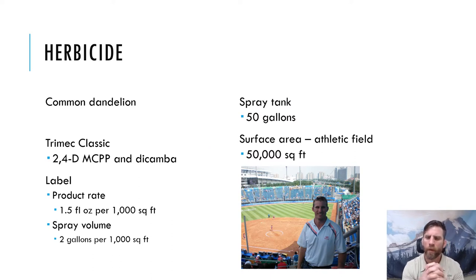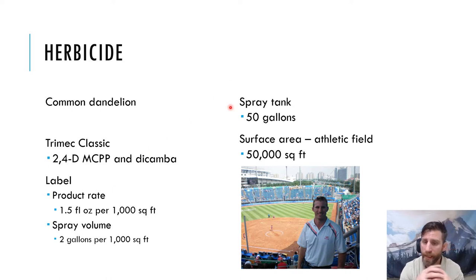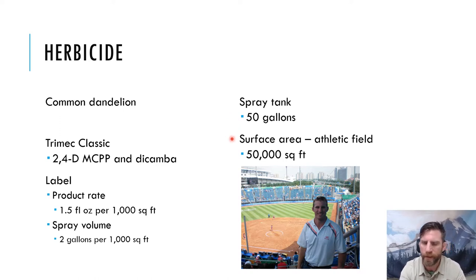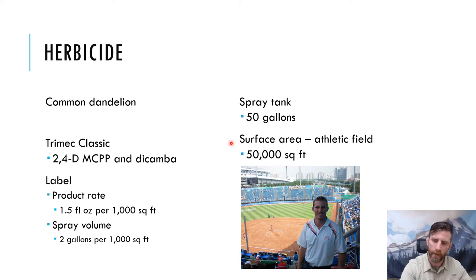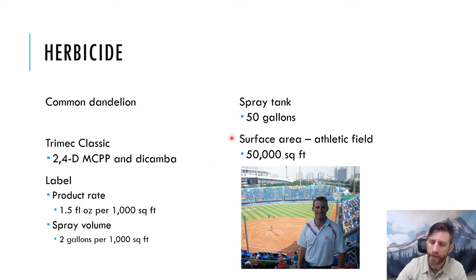For this example, we're going to use a spray tank that's 50 gallons and we're treating an athletic field of 50,000 square feet — just over an acre in size. These are the four important things you need when doing pesticide applications: the product rate, the spray volume, the spray tank size, and the surface area you're applying the product to.